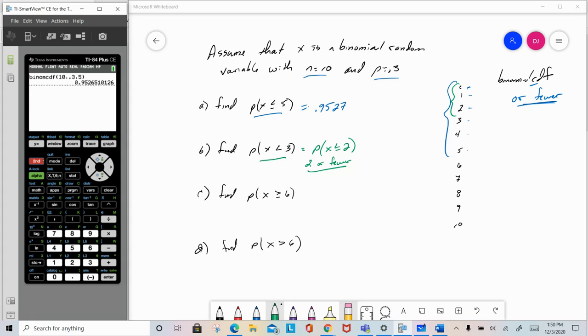So second distribution, and we're going to go down to the B, binomial CDF, 10 trials, 0.3 is the probability of success, and we want 2 or fewer. And so that's going to be 0.3828, three decimal places rounded correctly.